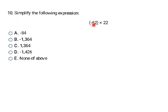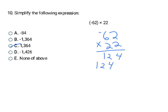Now I'm multiplying a negative and a positive number — different signs, so my answer is going to be negative. Right away I know it can't be C. I write the problem vertically: two times two is four, six times two is 12, then two times two is four again, and six times two is 12 again. Adding both partial products gives me 1,364. Different signs means my answer has to be negative, so my final answer is negative 1,364.